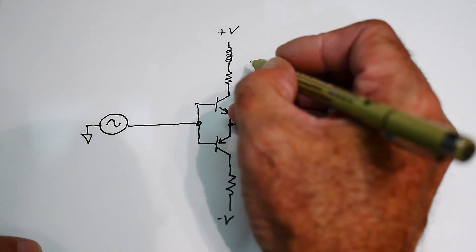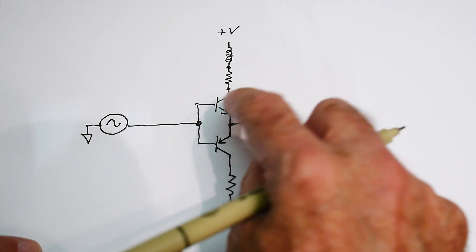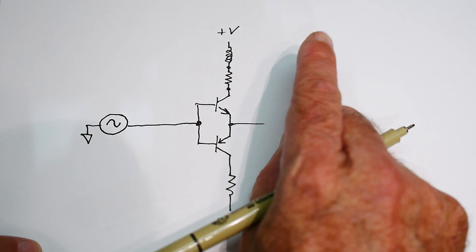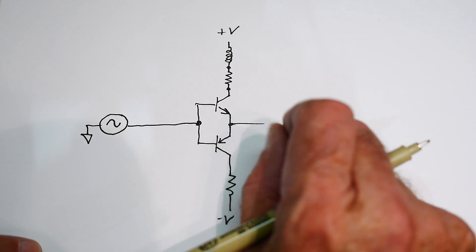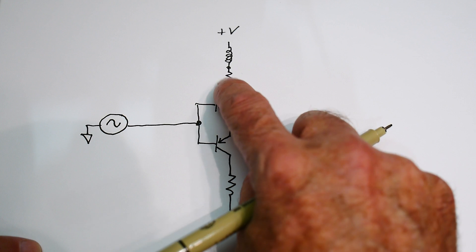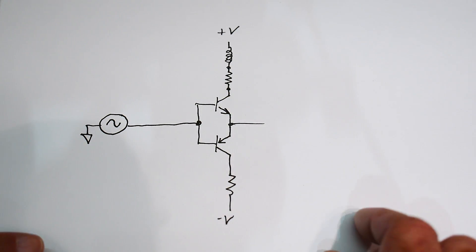So there's a trick that people do. You could put one scope probe here and one scope probe here, a different scope probe, like say this is channel A, this is channel B. And then you could go into your scope and set mathematics, show me B minus A, and it'll show you the difference across this resistor. So that's often used.